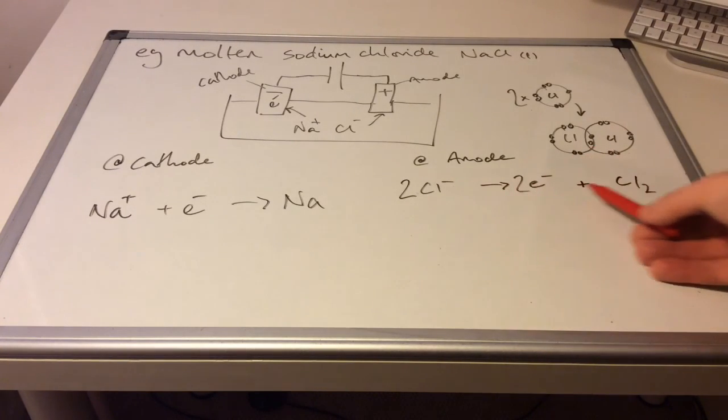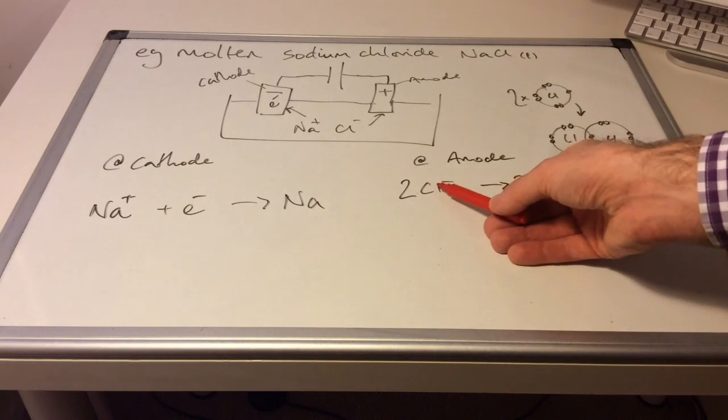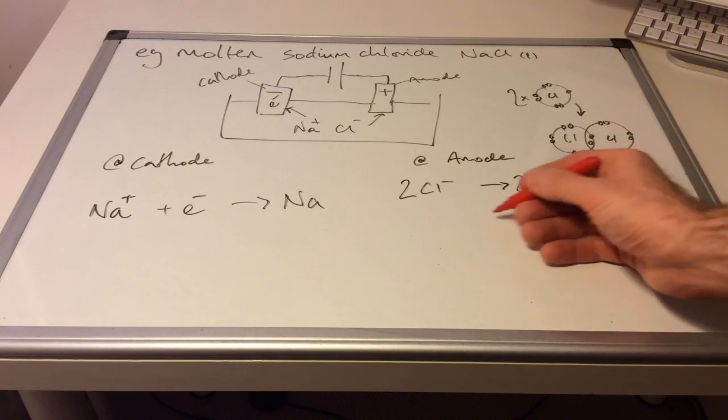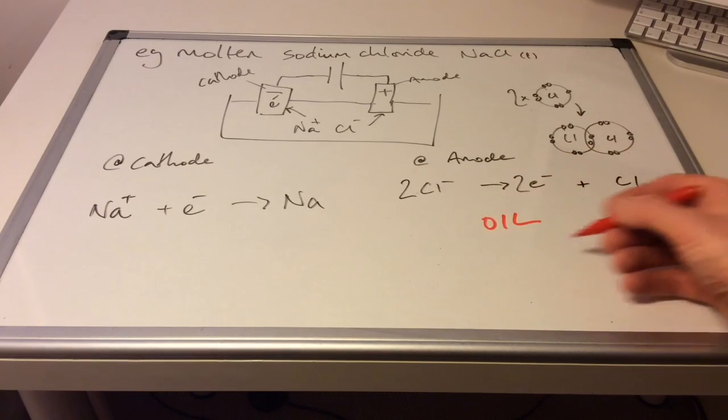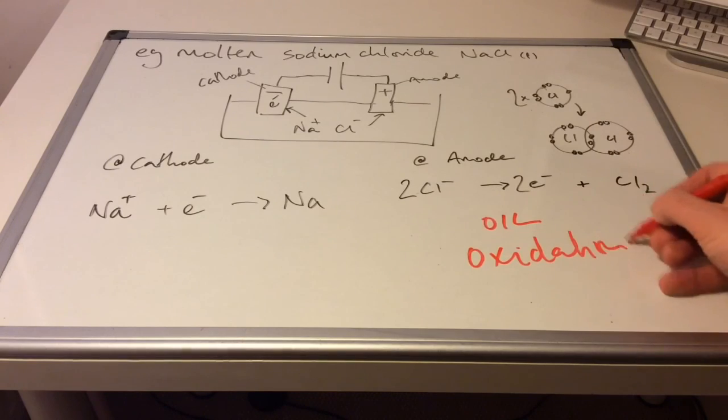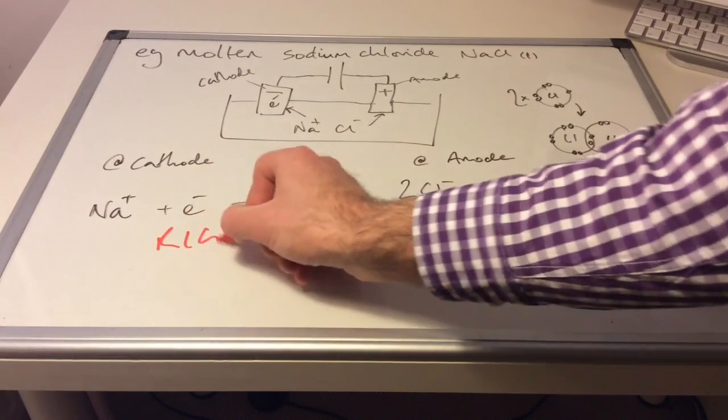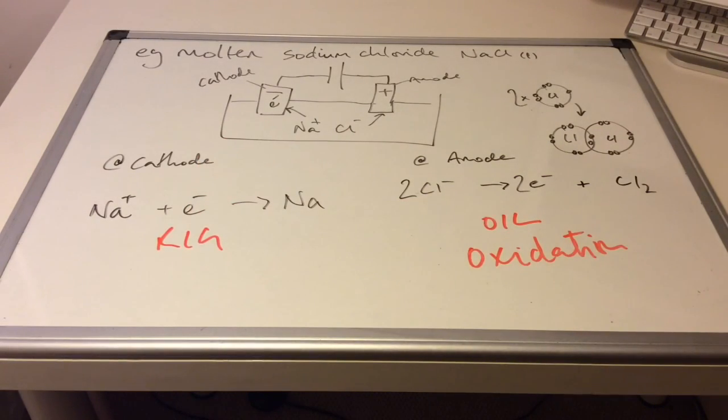In terms of oxidation and reduction. Well if we look at this one first. What's the chloride ion doing? Or what are these two chloride ions doing? They're losing electrons. So that is oxidation. What are the sodium ions doing? They're gaining electrons. So that is reduction.